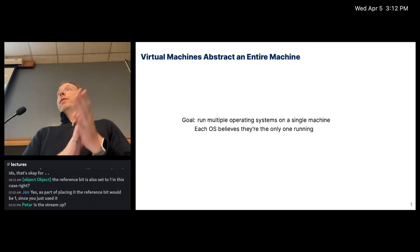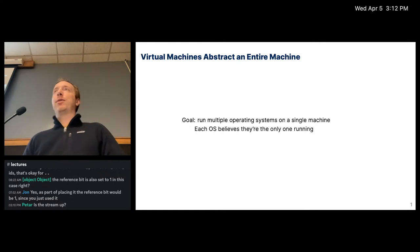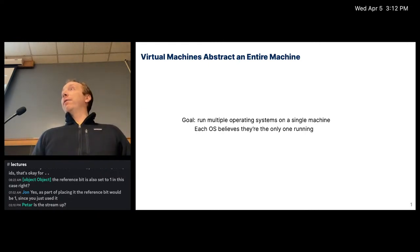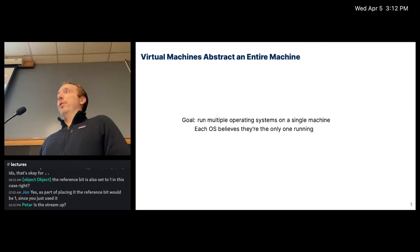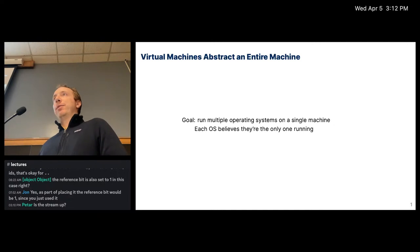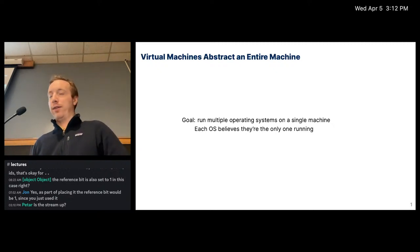So far we've talked about virtualization mostly in the context of virtual memory. Remember, virtualization is just fooling something into thinking it has all the resources. If we extend virtualization from just memory to being the entire machine, well, that's what a virtual machine is. The goal is that given a single machine, you should be able to run multiple operating systems, each thinking it is the only one running with no knowledge of any other.